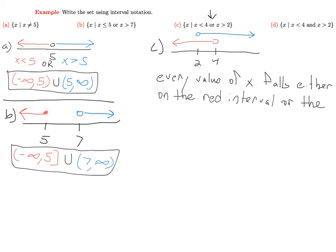This is because every value of x is either going to be less than 4 or it has to be greater than 2. In other words, this includes all values.